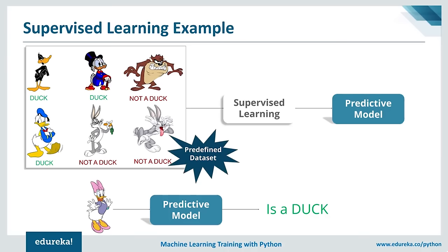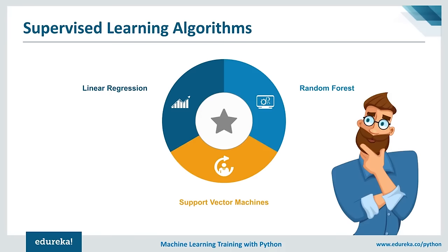It is called supervised learning because the process of an algorithm learning from training data can be thought of as a teacher supervising the learning process. If we know the correct answers, the algorithm iteratively makes predictions on training data and is corrected by the teacher. Learning stops when the algorithm achieves an acceptable level of performance. Popular supervised learning algorithms include linear regression, random forest, and support vector machines.